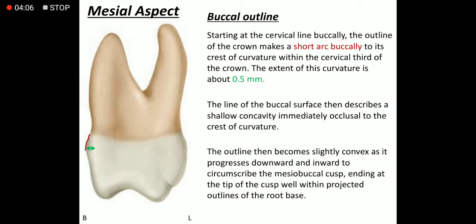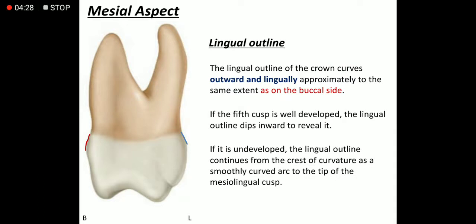Discussing the buccal outline from the mesial aspect: it starts from the cervical line, forms a short arch in the buccal direction of around 0.5 mm, then forms a shallow concavity which continues as a slight convexity, and then ends at the tip of the mesobuccal cusp.